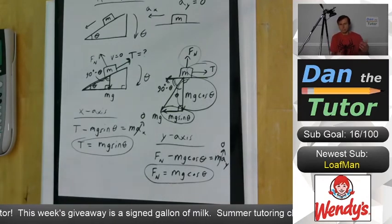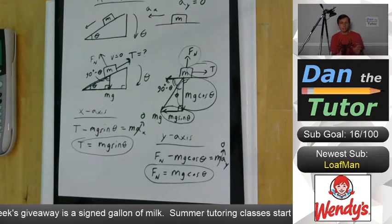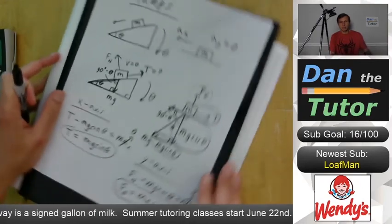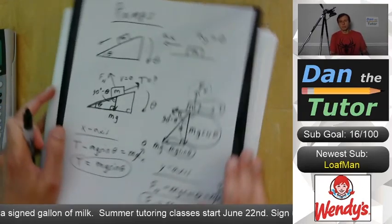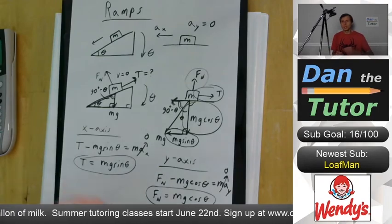And that's exactly how you would solve any ramp problem. Of course, no two physics problems are the same. But this does give you the strategy, and the secret, which is to really just rotate the diagram. And that's the secret of solving any ramp problem. Thank you all for watching, and we'll see you next time.